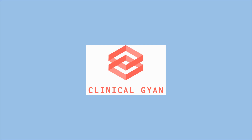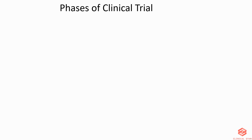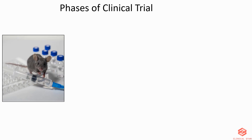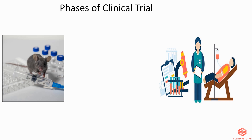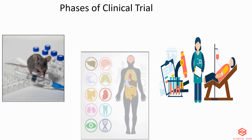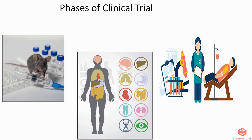Welcome to Clinical Game. Thank you for all your views and likes for the previous video. Today's topic is phases of a clinical trial. Trials can take place only after satisfactory information has been gathered from the preclinical or animal studies. While preclinical research usually provides some general information about dosing, the effect of a medication on the human body can be unpredictable. There are different phases depending on the drug or device.